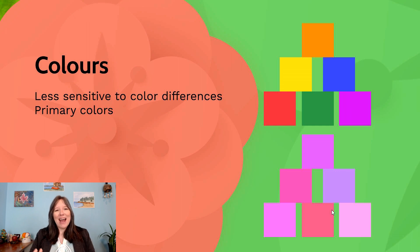So bright yellows, blues, reds, greens, those are really great for newborns. They can see and distinguish the differences. They're less sensitive to all the different colors of mauve or lavender or magenta.